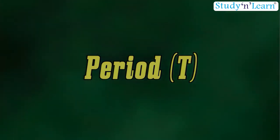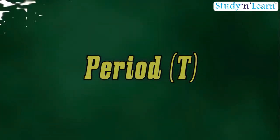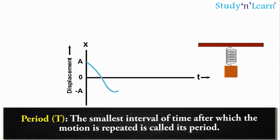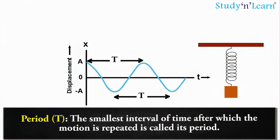Period T: The smallest interval of time after which the motion is repeated is called its period. Its unit is seconds.